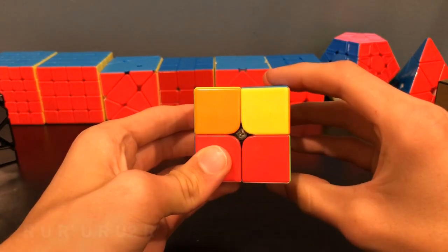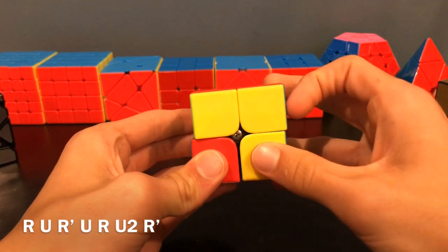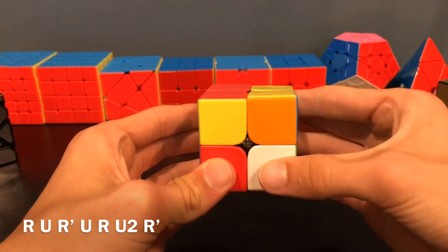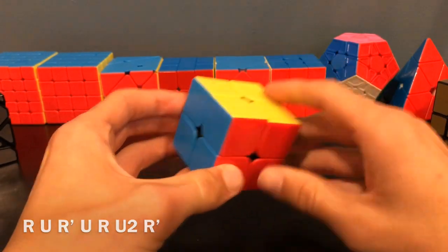Here's the algorithm. R, U, R prime, U, R, U2, R prime. There you go. That's that one.